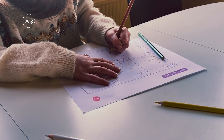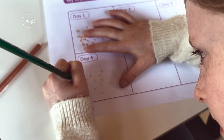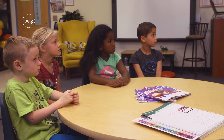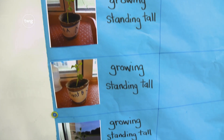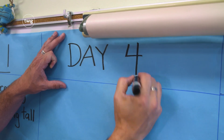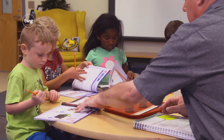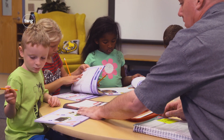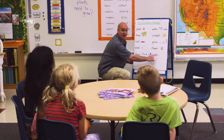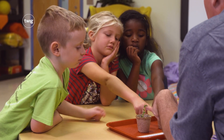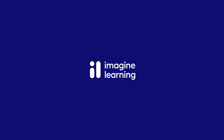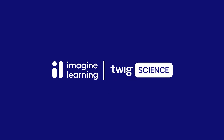It's time for students to bring all their experiences and knowledge together to wrap up their investigation. Their observations and data is starting to tell a story about what living things need to survive. By the end of the module, students will have a clear understanding of the anchor phenomenon: all living things have needs.